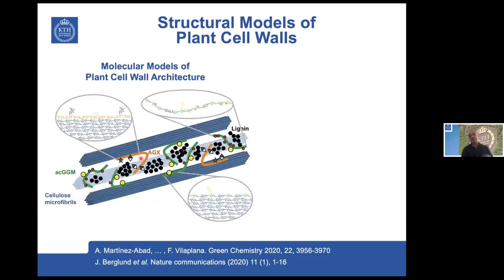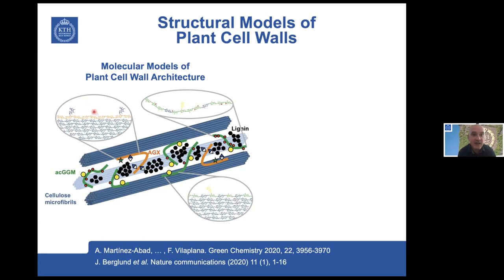I wanted to highlight two important contributions we made recently about how these sequences might influence plant cell wall assembly. This is a molecular model we made for the assembly of a plant cell wall, where we found that mannans with high acetylation are much more flexible, but the presence of specific regular features in xylan actually tailors the interaction with cellulose. You can see xylan — an important hemicellulose — co-crystallizing on the surface of cellulose.